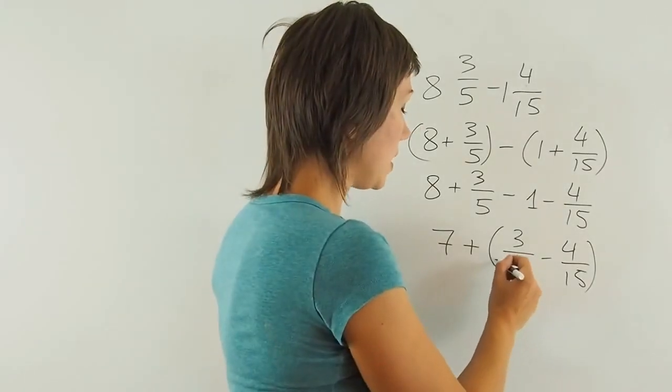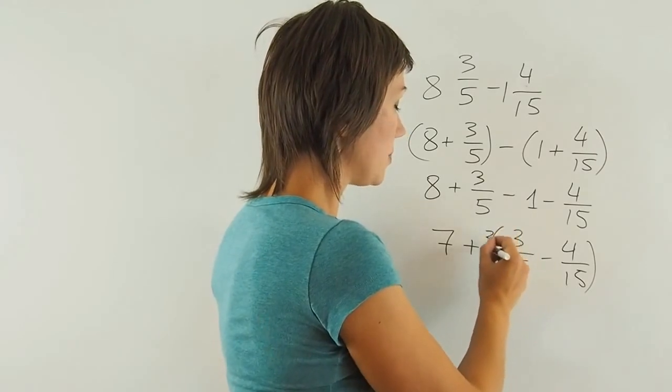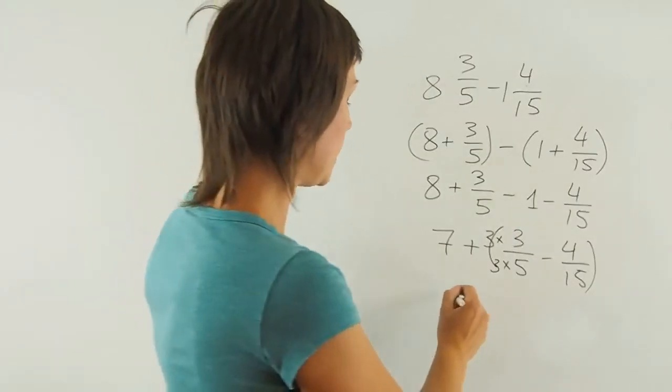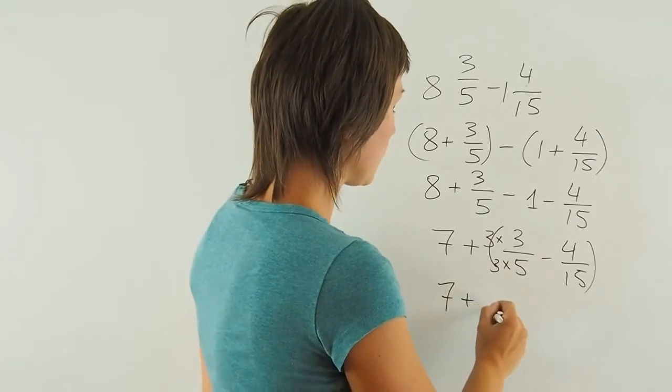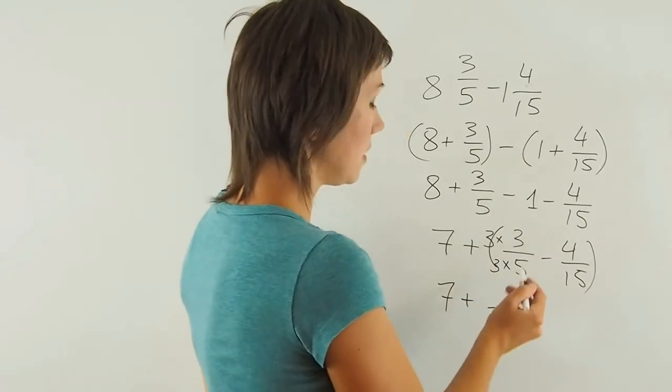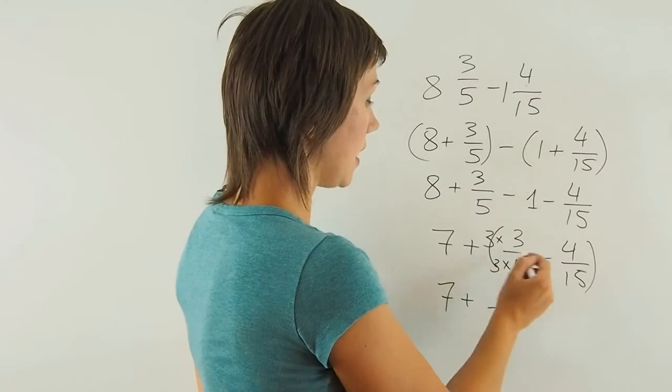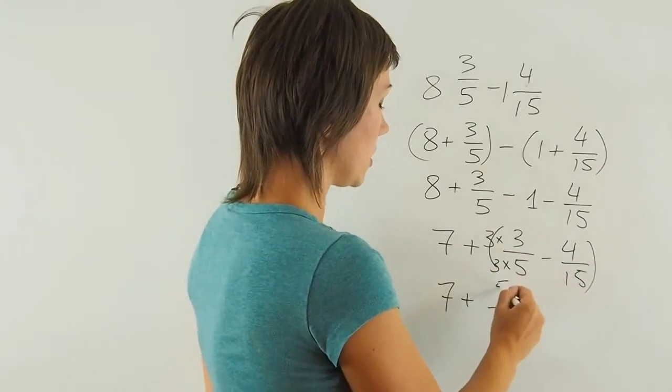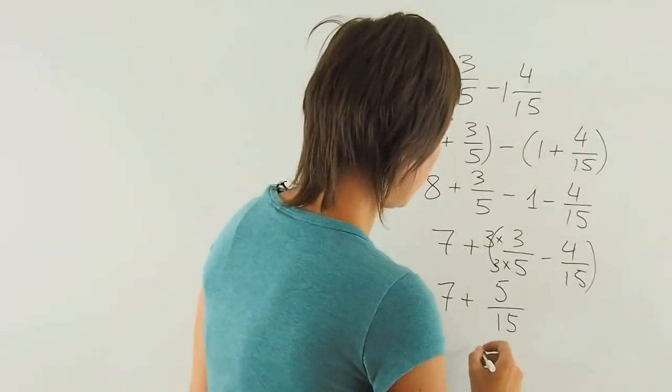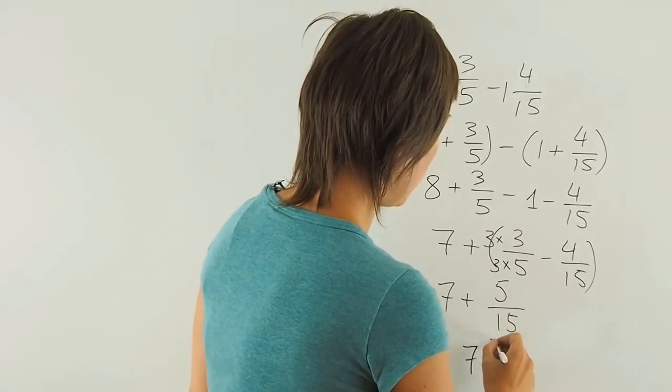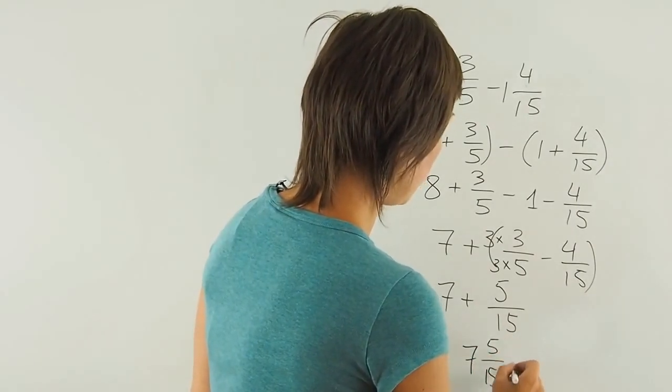So I'll multiply this by 3 and this by 3 to get to 15. And then I'll get 15, 9 minus 4, which gives me 5. So now the final answer is 7 and 5 fifteenths.